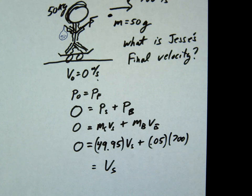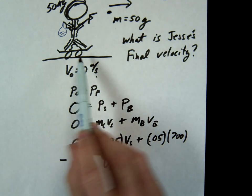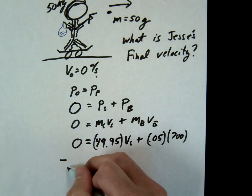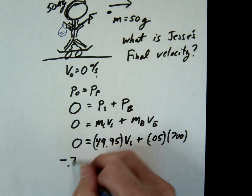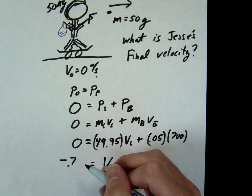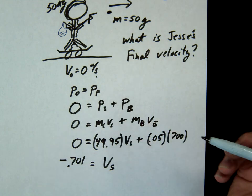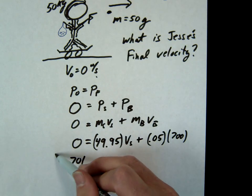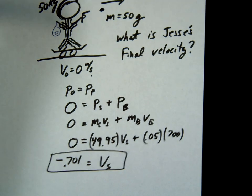You do get a negative answer. What's the negative telling us? He's going to the left — opposite direction. And the actual answer is 0.7 meters per second. And when you used 50 kg you also get 0.7. So notice, in the context of this problem it doesn't really matter. But conceptually I want you to get it, and in future problems it may matter. All right, let's do one more.